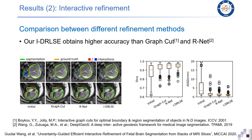We also compared our interactive level set with some existing refinement methods such as GraphCut and GrabCut. With the same set of initial segmentation and the same set of user interactions, our method can obtain better results than GraphCut and GrabCut. Quantitative evaluation results also show the advantage of our interactive level set.